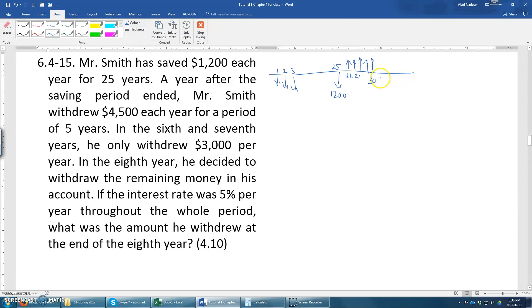And then for the next two years, he withdrew $3,000 each. $3,000 each and then this is $4,500 and in the 8th year he withdraws the remaining amount. The remaining amount in the 8th year, so this is 31, 32, and then 33 years, the remaining amount. This remaining amount we need to find.